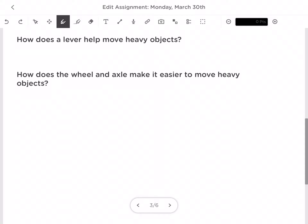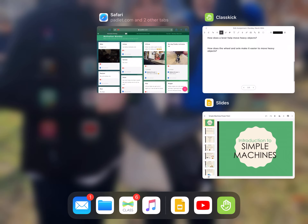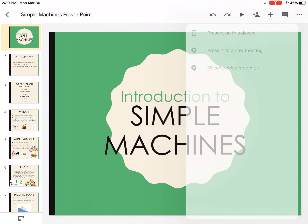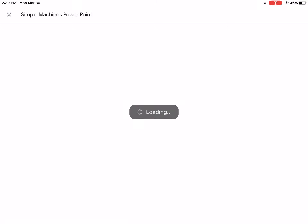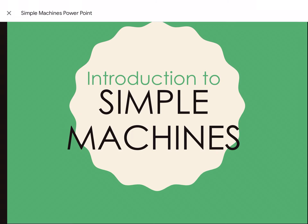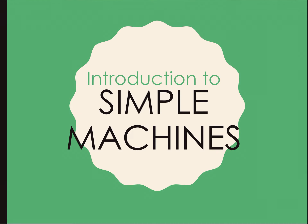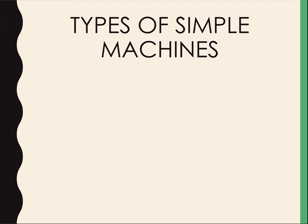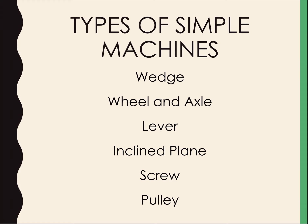We're going to go into my slideshow today because it is going to help you learn about these simple machines. So let's do a little introduction to simple machines. Simple machines are machines with few or no moving parts that are used to make work easier. We have six different types of simple machines.